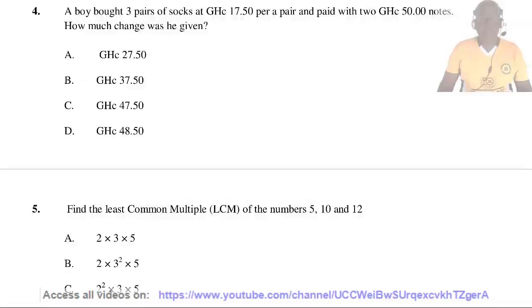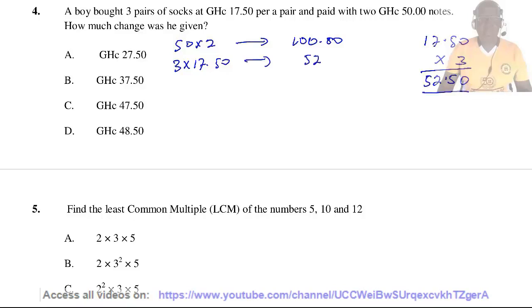Question 4. A boy bought 3 pairs of socks at 17.50 cedis a pair and paid with two 50 cedis. How much change was he given? Total amount he had was 50 times 2 which is 100 cedis. The socks cost 3 times 17.50: 0 times 3 is 0, 15 carry 1, 21 plus 1 is 22 carry 2, 3 plus 2 is 5. So 52.50. Now 10 minus 5, 9 minus 2 is 7, 4. So the answer is C, 47.50.